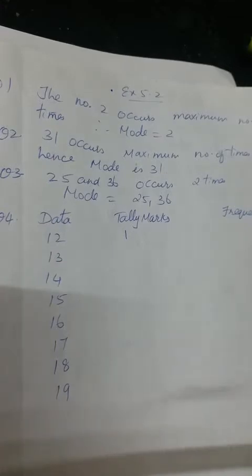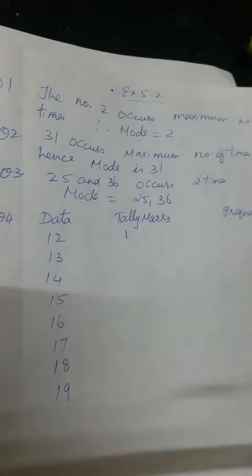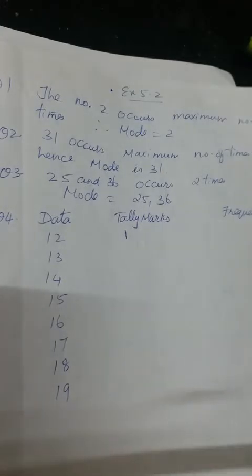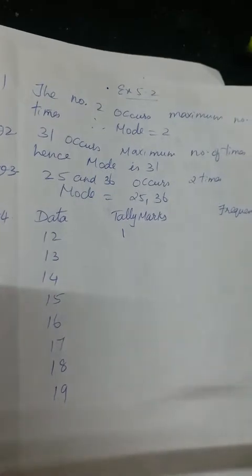Now in 5.2 what you have is mode. What do you mean by the word mode? Mode means the value which occurs maximum number of times — that is called the mode. When you see a group of values, a group of information or data whatever is given, the number which is occurring maximum number of times is called the mode.